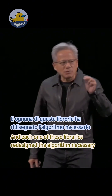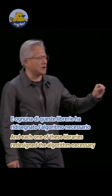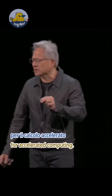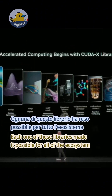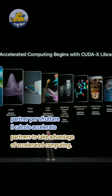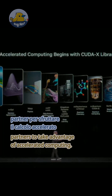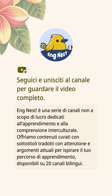This is just a representative of 350 different libraries in our company. Each one of these libraries redesigned the algorithm necessary for accelerated computing. Each one of these libraries made it possible for all of the ecosystem partners to take advantage of accelerated computing.